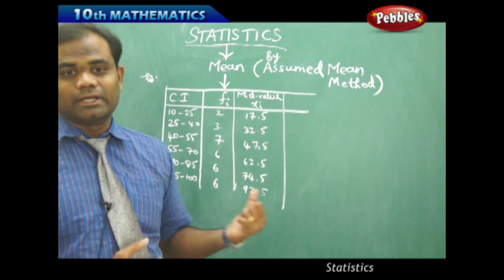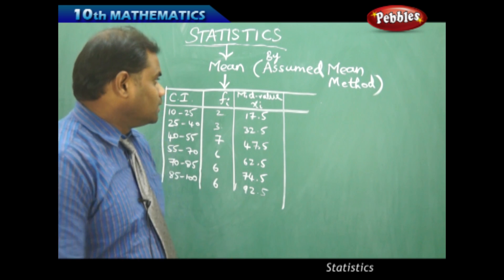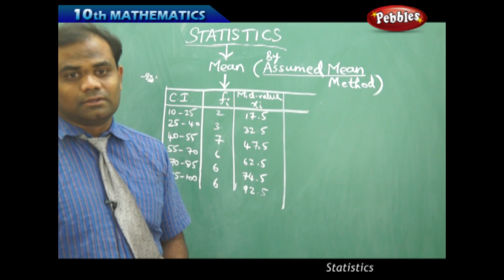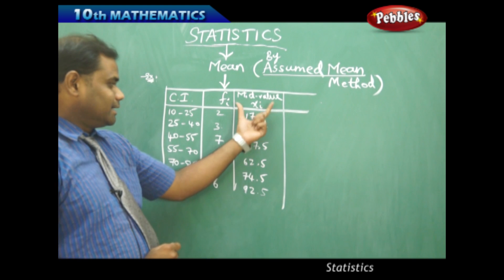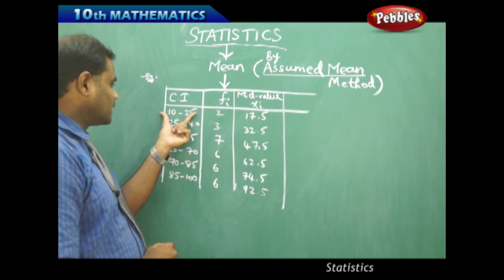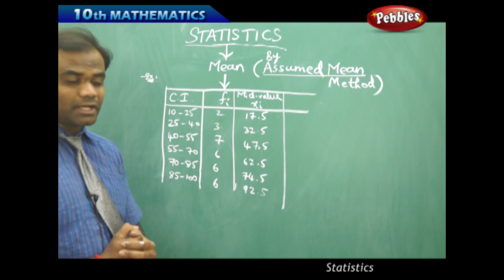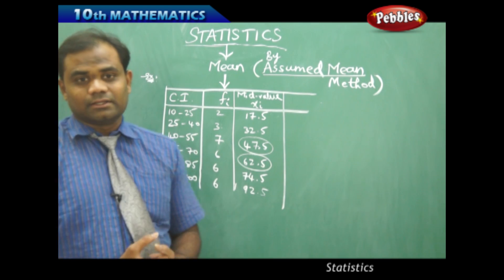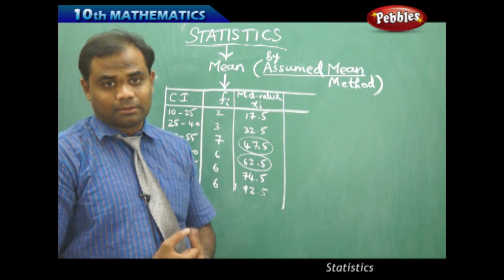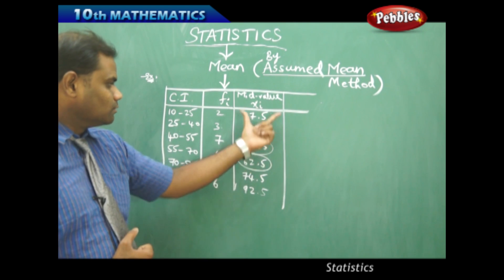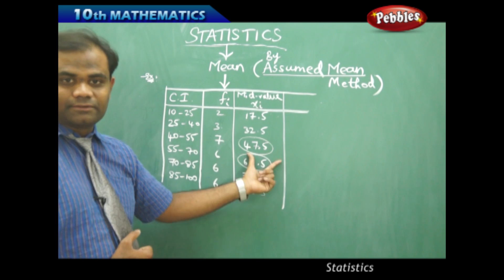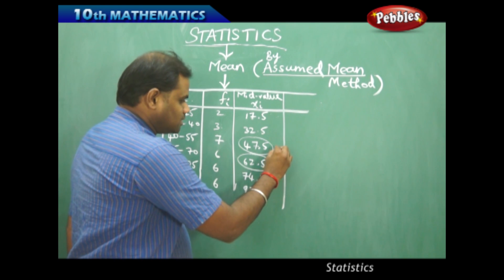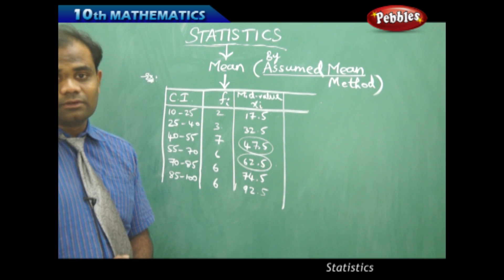Now let's see how the assumed mean is calculated. The term 'assumed mean' itself tells us that we assume one of the values as the mean. Generally, from all the xi values — which are the mid-values of the class intervals — we try to take the middle value, because each middle value is balanced between the extremes on the left and right. So we can choose the middle xi as the assumed mean.